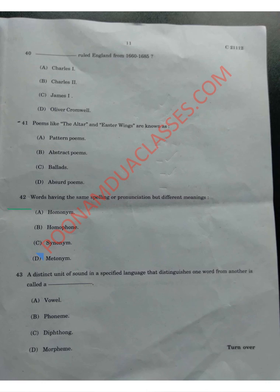Question 42: words having the same spelling or pronunciation but different meaning — the correct answer is homonym. A homonym has two major categories: homophones, which are words that sound the same but differ in meaning, and homographs, which are words spelled the same but differ in meaning or pronunciation. Homonym combines both homophone and homograph.